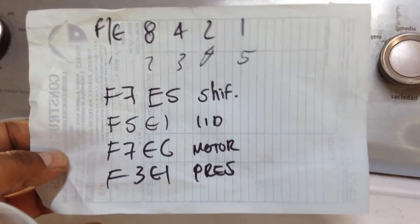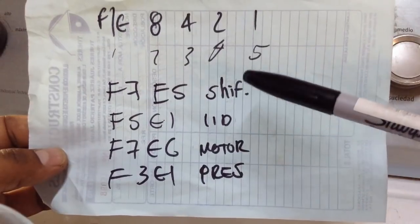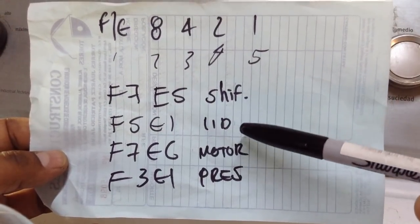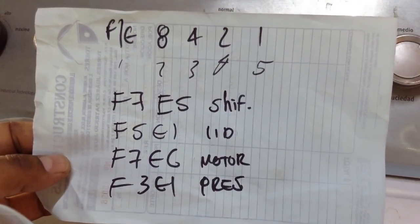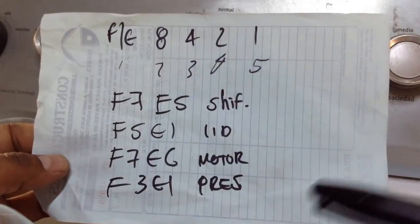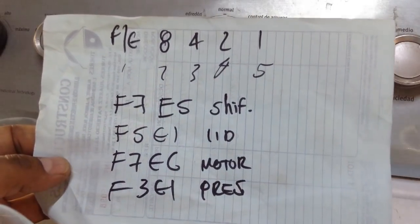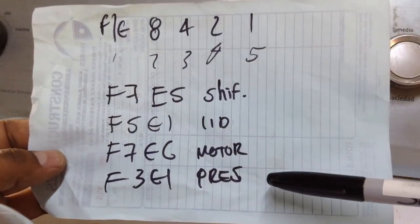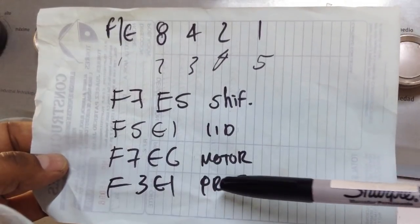Ya tenemos los errores. Vamos a ver qué significa. Los errores que nos dan es el primer inmediato es falla de shifter. El inmediato antes es falla de lid, no falla de lid lock. El siguiente error es un error que me preocupa, es F76, falla de motor. Y el último es falla de presostato.